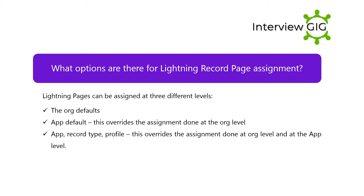What options are there for Lightning Record Page Assignment? Lightning Pages can be assigned at three different levels: the Org Defaults; App Defaults, which overrides the assignment done at the org level; and App Record Type Profile, which overrides the assignment done at both the org level and the app level.